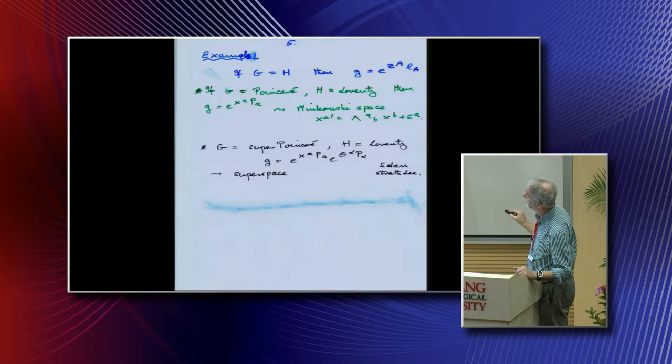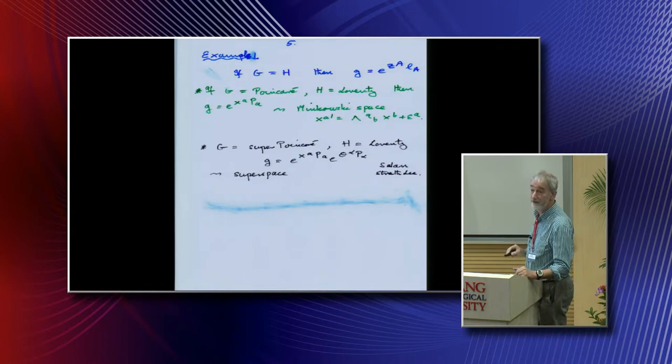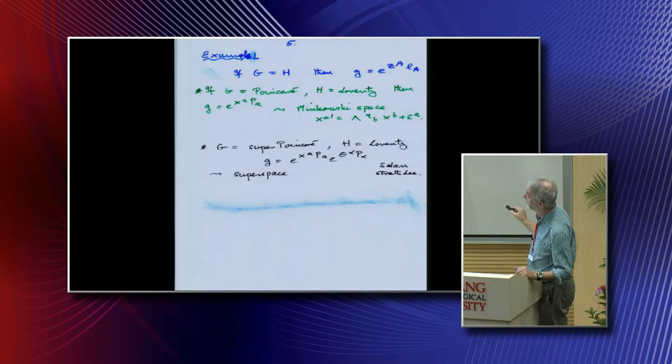Let's do another one. Let's take G semi-direct product L, we take the super Poincaré group here, and then we take the Lorentz group. All the fields have gone, we get the coordinates, so we have an X and a theta. This is of course the famous construction of Salam and Strathdee for superspace. So this was the paper he handed to me.